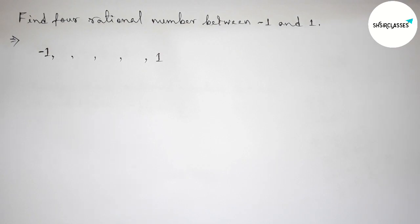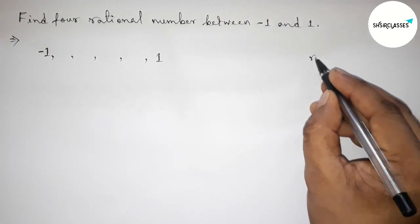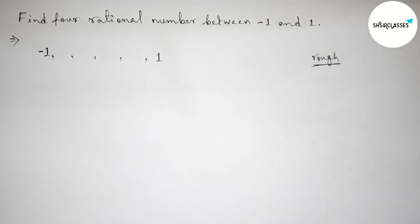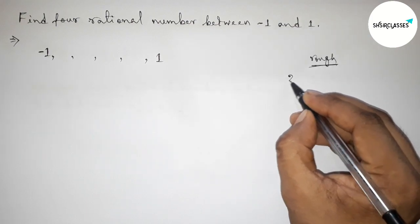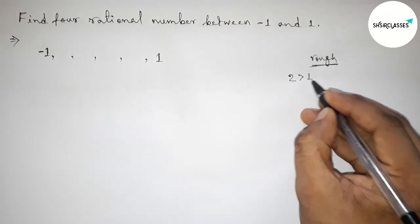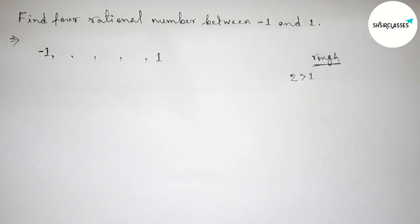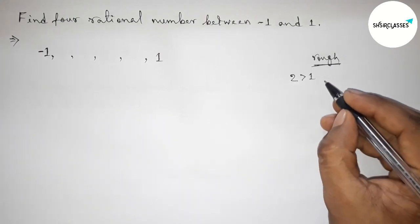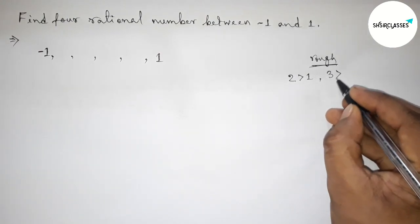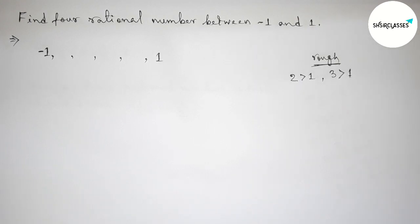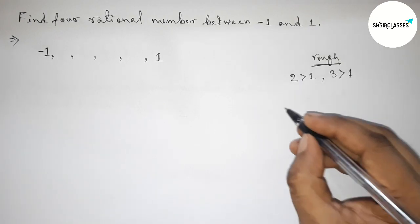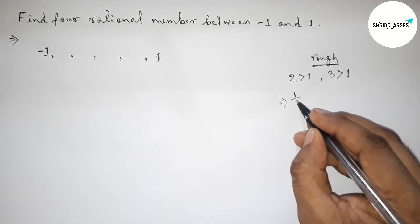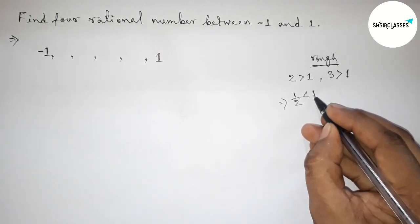So now roughly discussing here some important calculations. First of all, taking here a number two, and this is greater than one. Taking another number, so taking here three, this is greater than one. Next, taking inverse of both numbers. So inverse of two, that is one by two, this is always less than one.